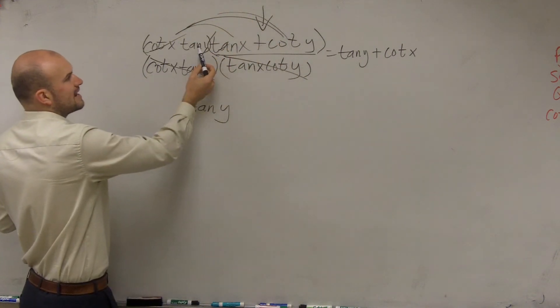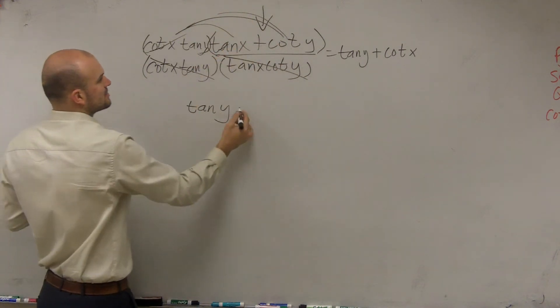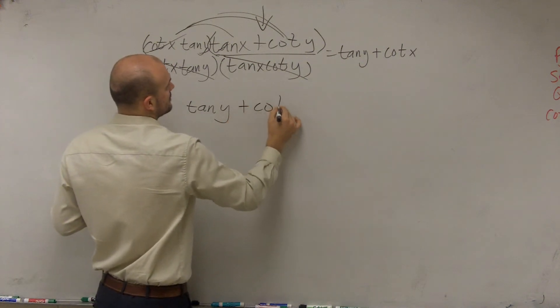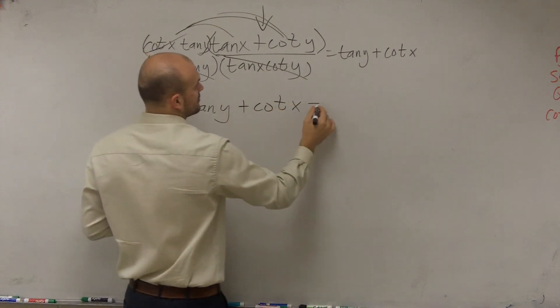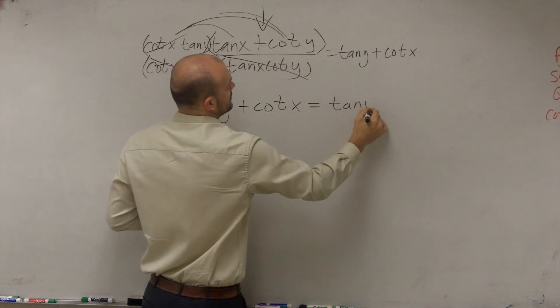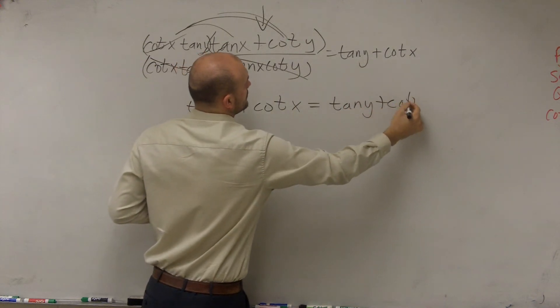And then when I multiply here times here, I know that cotangent of y and tangent of y are reciprocals. So therefore, I'm just left with plus cotangent of x, which is equal to tangent of y plus cotangent of x.